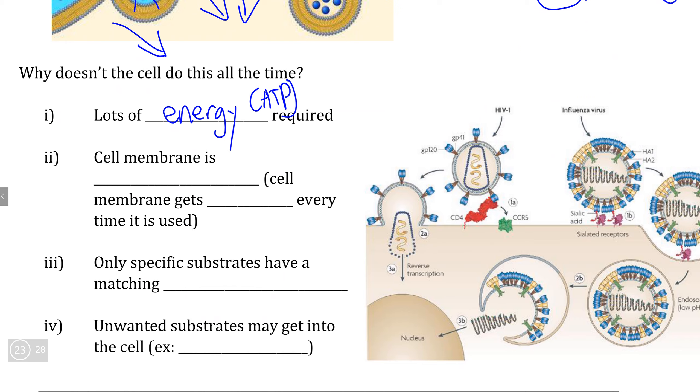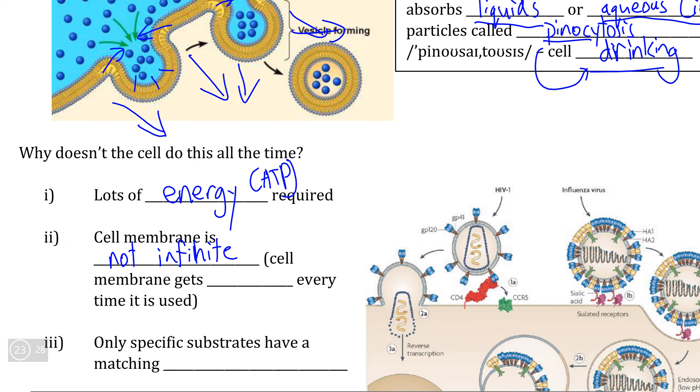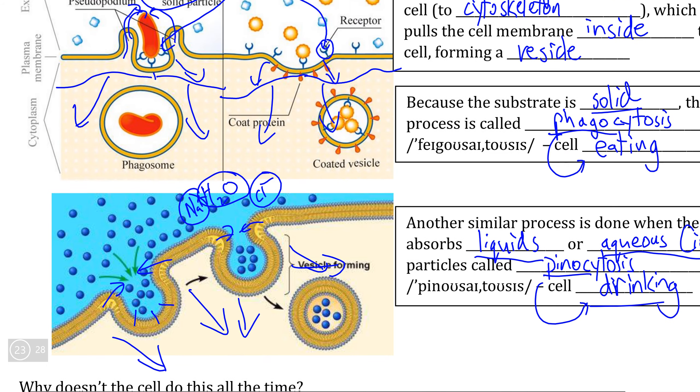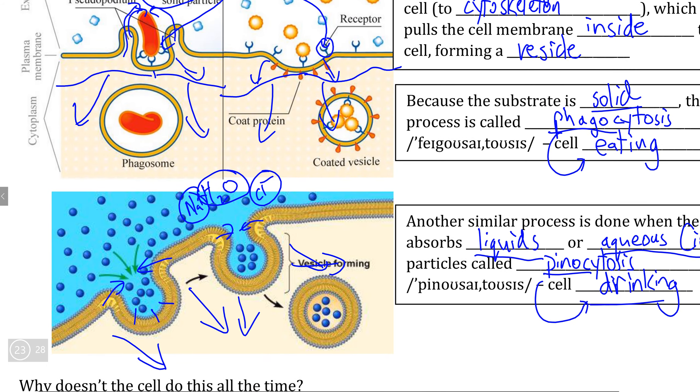Now, the second limitation that we have is the actual cell membrane itself. The fact that the cell membrane is not infinite—it has a limited surface area. Now, as we can see here,